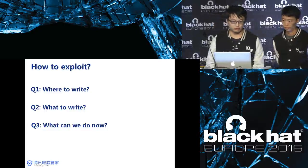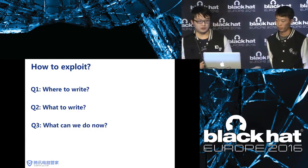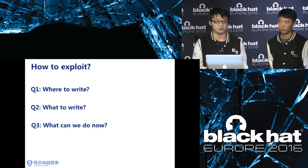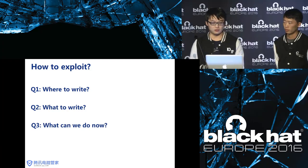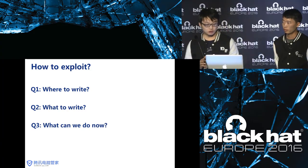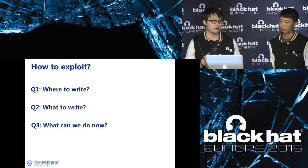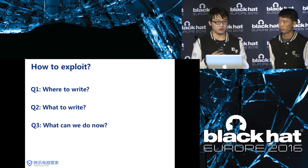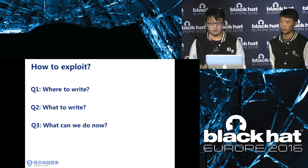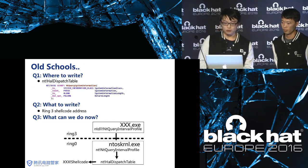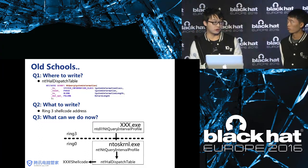I'm going to introduce the zero-to-one technique. Basically, if we want to attack programs in user space or kernel space, we have to deal with three problems: the first is where to write, the second is what to write, and the third is what can we do after that. For the first question, we need to interrupt the normal procedure of the process and force it to jump into our shellcode. In the old days attacking Windows XP or Windows 7, these three questions were quite simple.